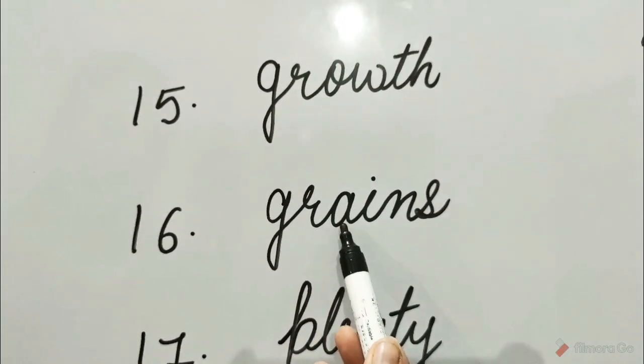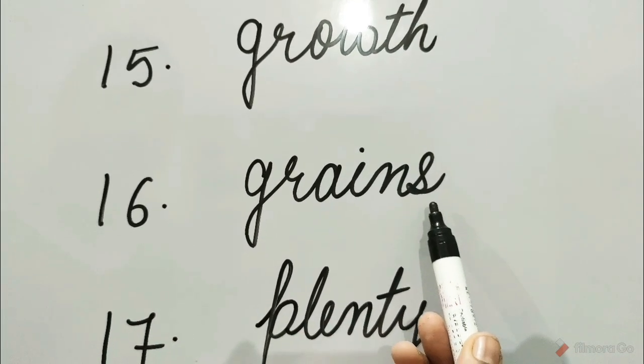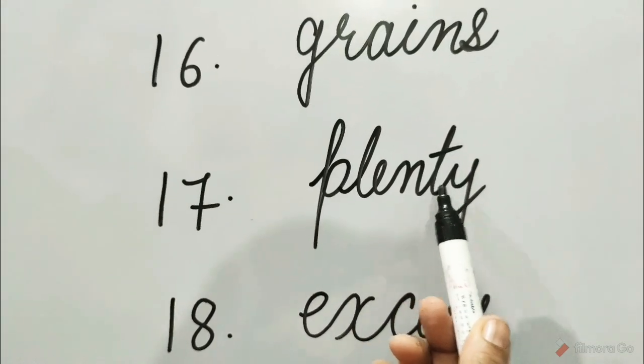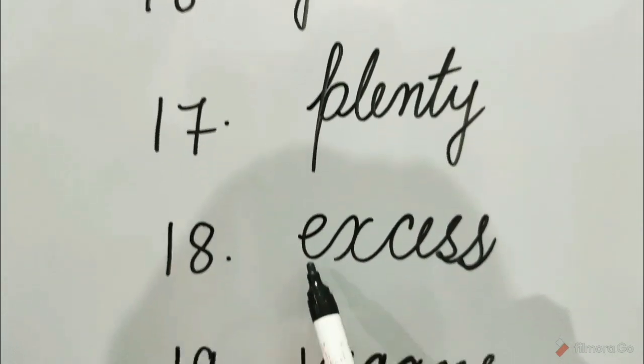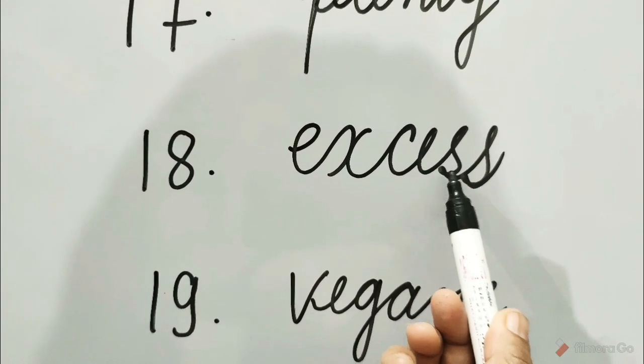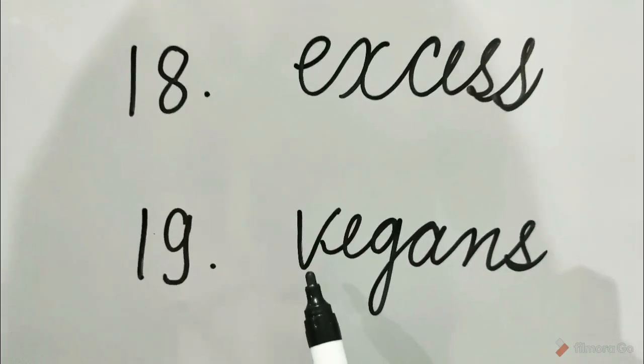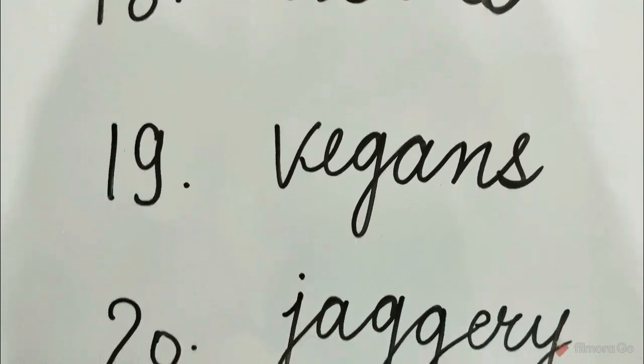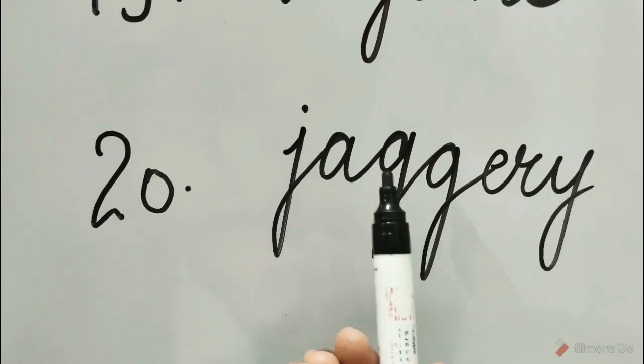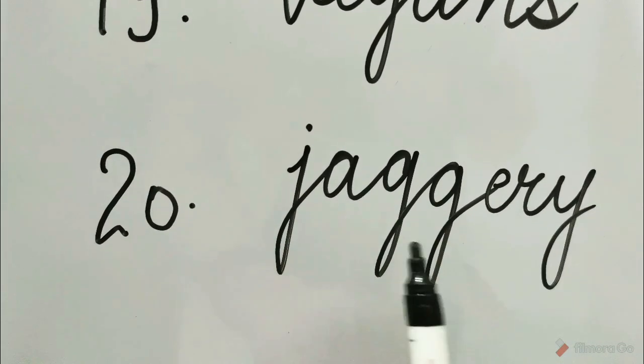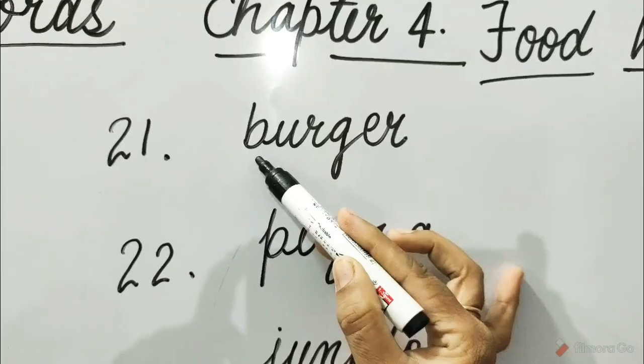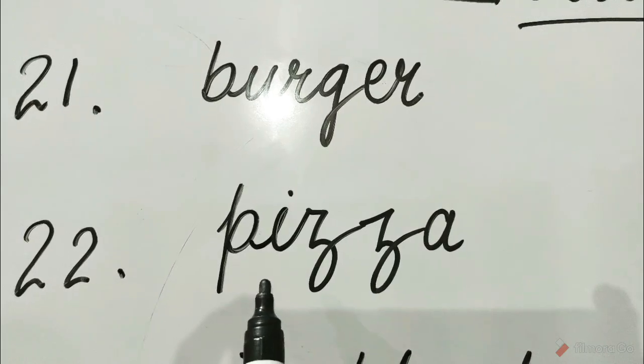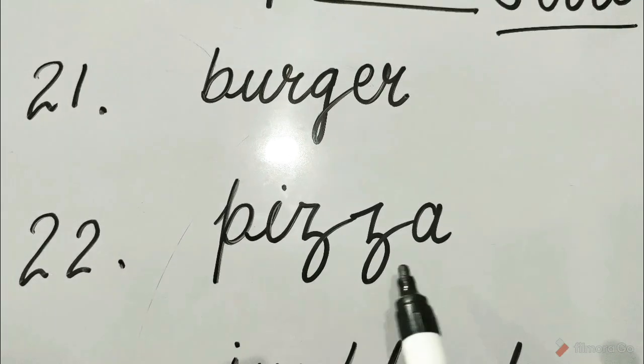G-R-A-I-N-S Grains, P-L-E-N-T-Y Plenty, E-X-C-E-S-S Excess, V-E-G-A-N-S Vegans, J-A-G-G-E-R-Y Jaggery, B-U-R-G-E-R Burger, P-I-Z-Z-A Pizza.